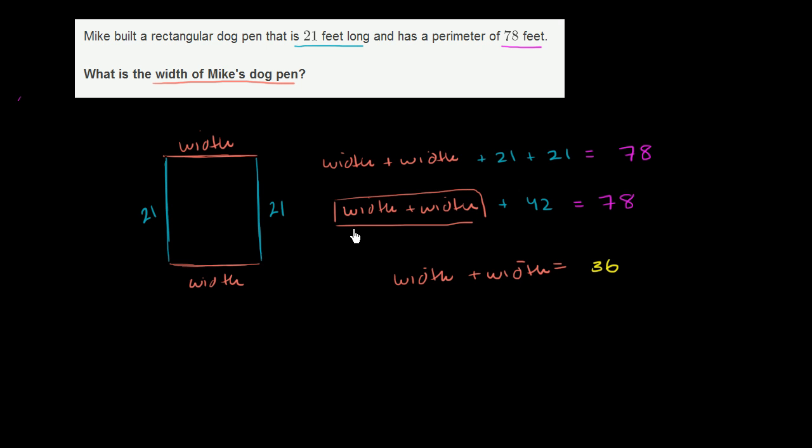And you can verify this. If this thing right over here is equal to 36, if the sum of my two widths, or essentially this is two times the width, if two times the width is 36, then width plus width is 36. Then this right over here is 36. 36 plus 42 is indeed equal to 78.